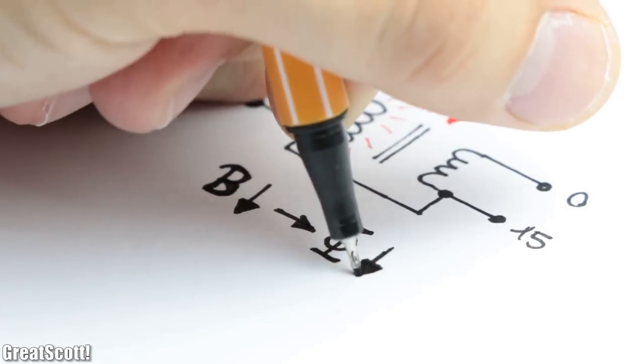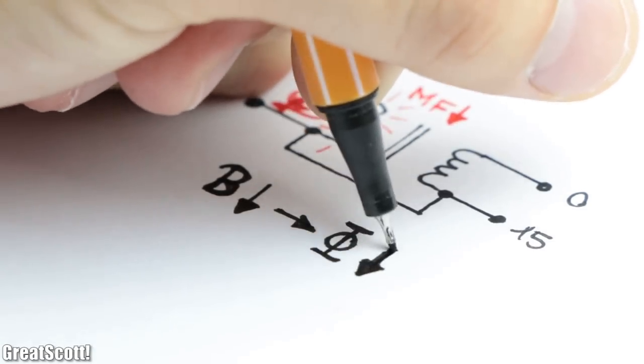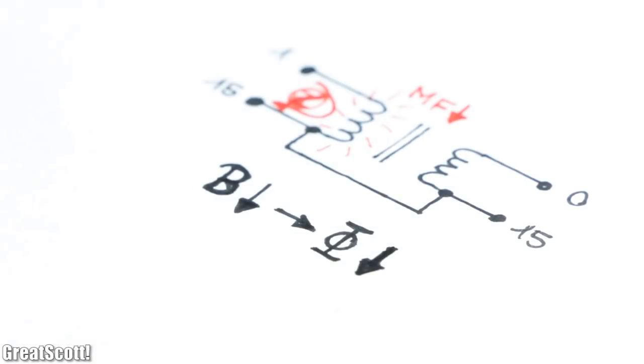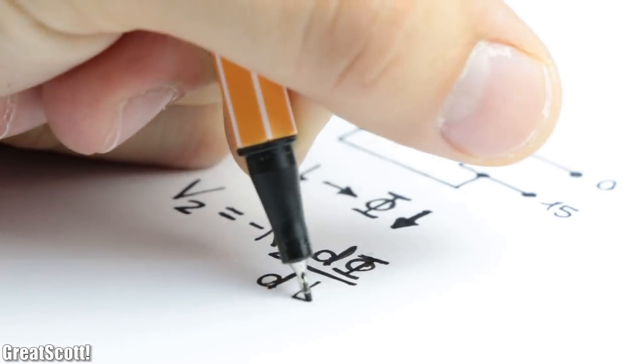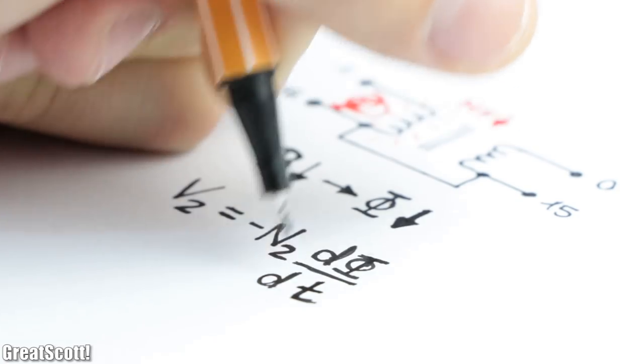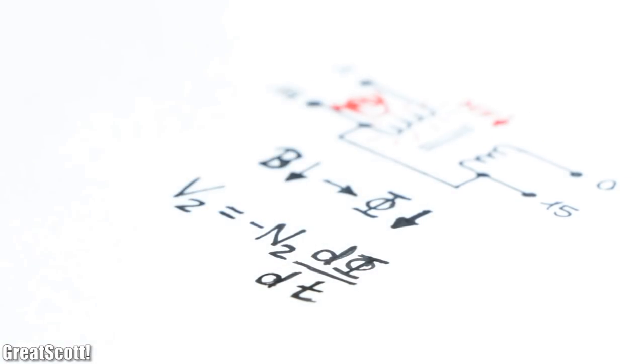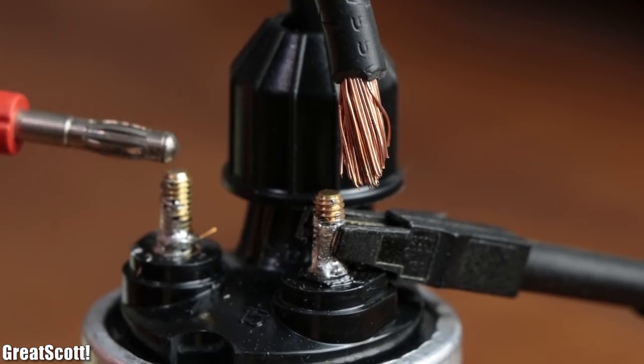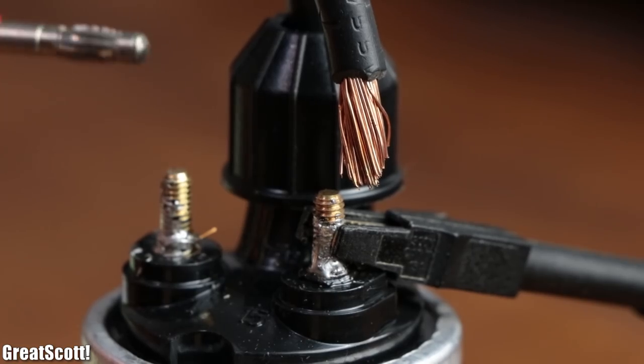This reduces the magnetic flux density and thus the magnetic flux, and therefore induces a voltage into the secondary which due to the turns ratio should be pretty high. But as you can see here, apparently not powerful enough to create a spark.